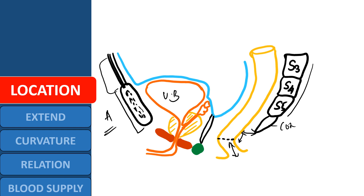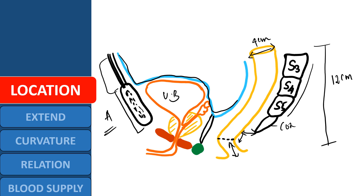Beyond this point begins the anal canal. The rectum is roughly 12 cm in length, with an internal diameter starting from 4 cm. At its lower end, it is dilated to form the rectal ampulla. The peritoneum is reflected from the anterior abdominal wall over the urinary bladder and extends to cover the upper two-thirds of the rectum anteriorly. The pouch between the urinary bladder and the rectum is known as the rectovesical pouch.